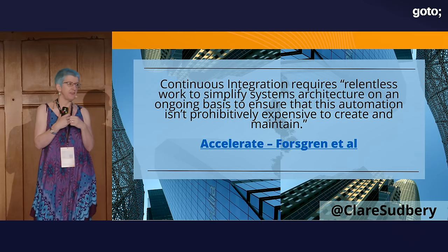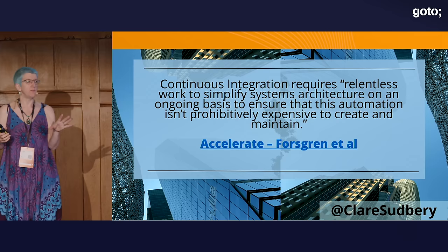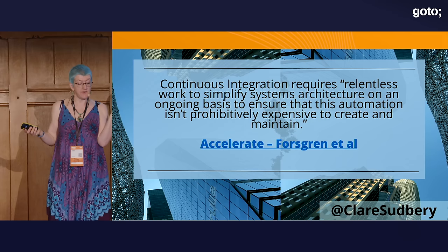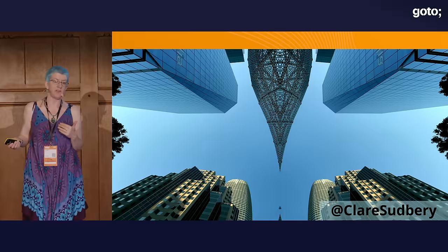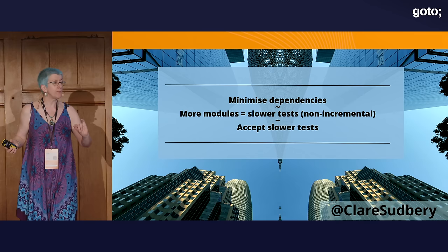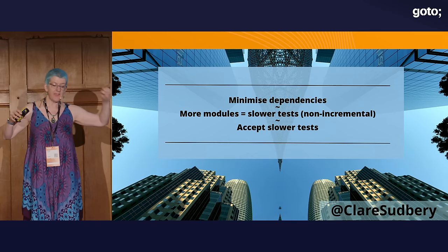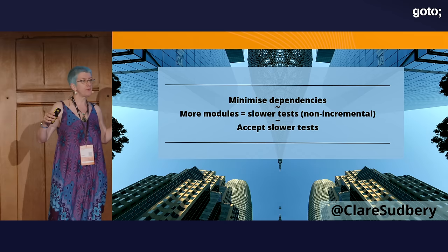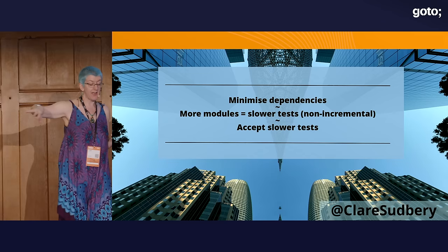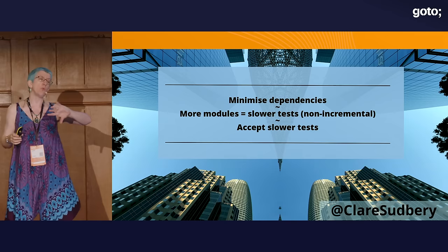When Accelerate says continuous integration, they mean your code is integrated with the rest of the code base several times a day — at least once a day. They do allow for short-lived branches, but I'd argue it's better without them. Now the code is modular, but their tests are not incremental — every time they deploy they run the whole test suite in the pipeline. Because there are more modules, there are actually more tests, and this is now slowed down.